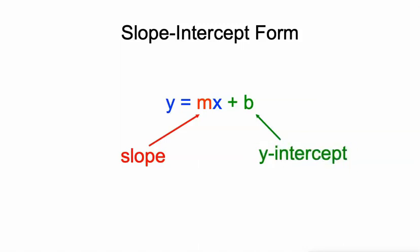And b is the y-intercept, so the value of y, or the value of our function when x equals 0.